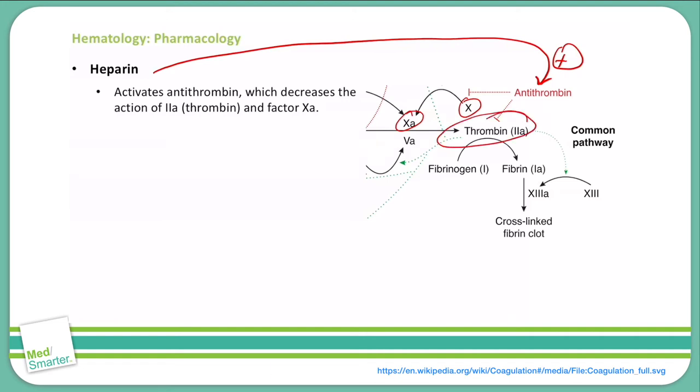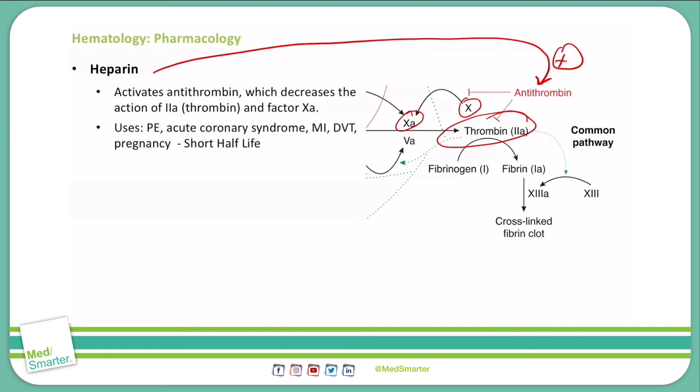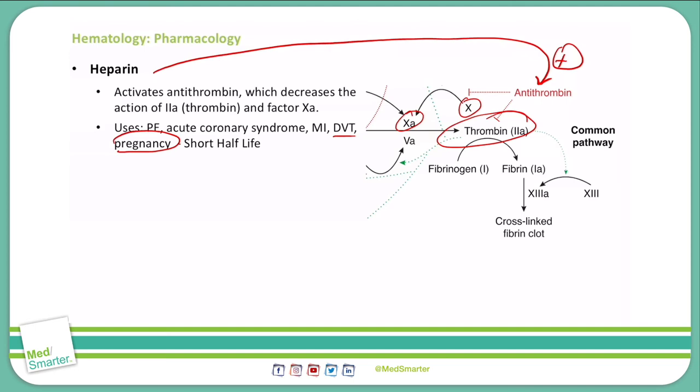What do we use heparin for? When we have a pulmonary embolism, acute coronary syndrome, a myocardial infarction, or deep vein thrombosis. One thing heparin is very useful for is pregnancy — it has a very short half-life, so if we have to stop the anticoagulation we can, and it also does not cross the placenta, which is very beneficial for use in pregnancy.